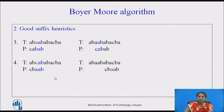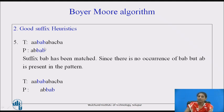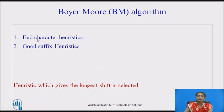We find the maximum shift distance from both heuristics and select whichever gives the longer shift. Consider another scenario: B, A, B is matched and there is a mismatch. B, A, B is not present elsewhere in the pattern, but A, B is present. So we align to the next shorter suffix, A, B, not to B, A, B. All such conditions must be considered while checking occurrences using the BM algorithm. We calculate bad character heuristics — whether the mismatched character is present in the pattern — and how many characters are matched as the good suffix. Whichever gives the longest shift is selected.